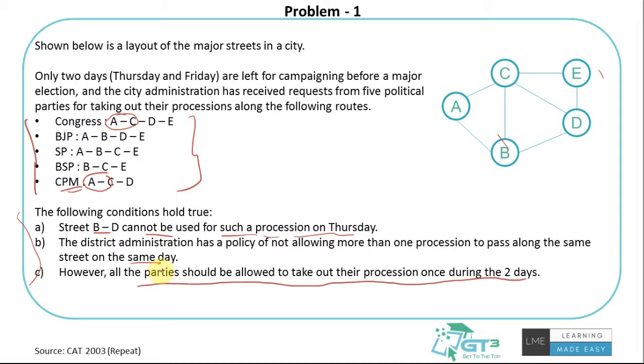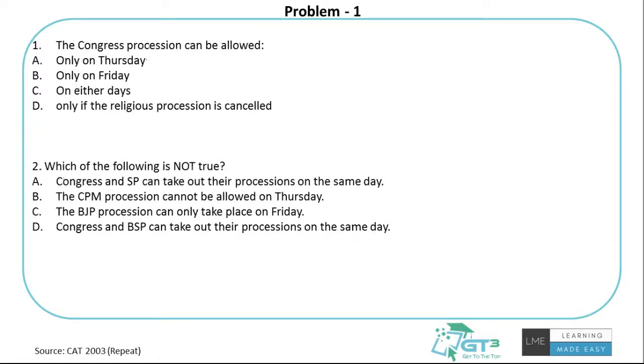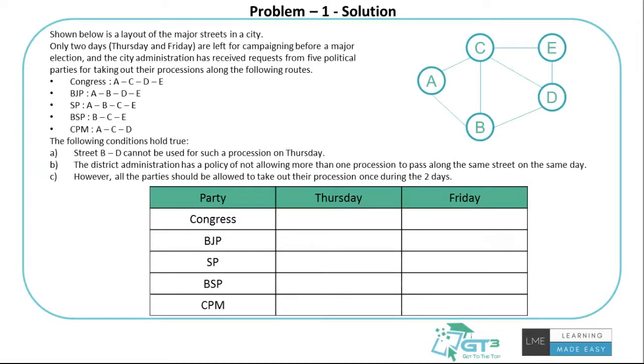Hope you paused it and tried. Let's see how we can solve. Even if you figured out the entire schedule, you still need to see the questions to mark the answers. Now let's get to the solution part. We'll first get the schedule clear, then we can come back and answer these questions. So what we've done is drawn a table. We have five parties, so we have to figure out who's doing it on Thursday and who's doing it on Friday. First and foremost, this is a very good clue to get started.